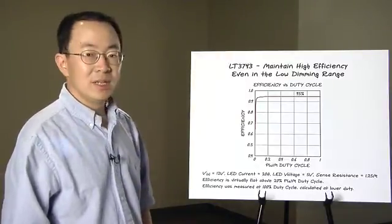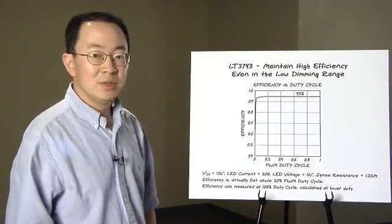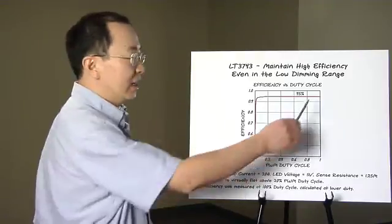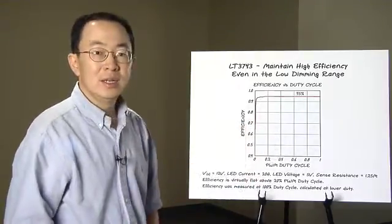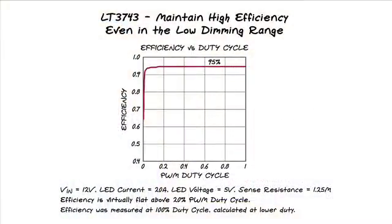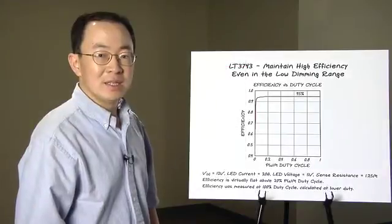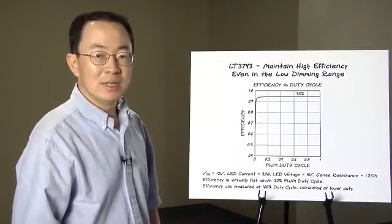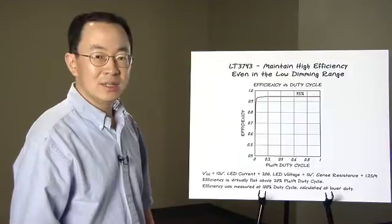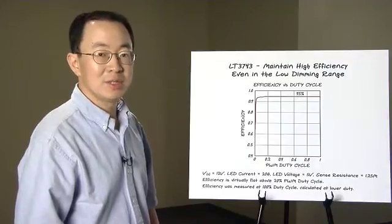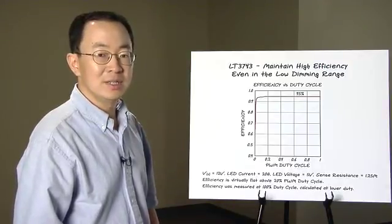The efficiency of 95% is achievable. The efficiency stays flat across most of the PWM dimming range because of the low power dissipation when PWM on pulses is short. High efficiency across the whole duty cycle range is important. Not just because it looks good, it has less loss at a given output. That means your heat sink and solution size can be much smaller using the LT3743.